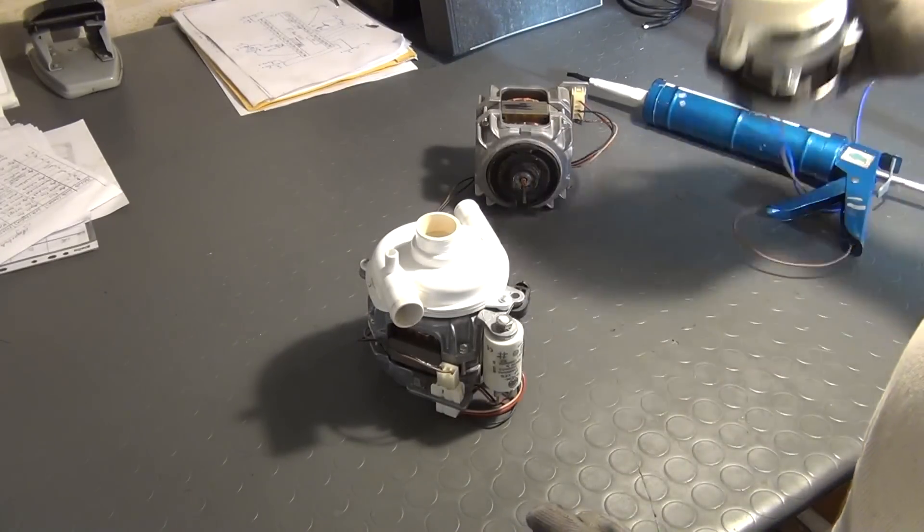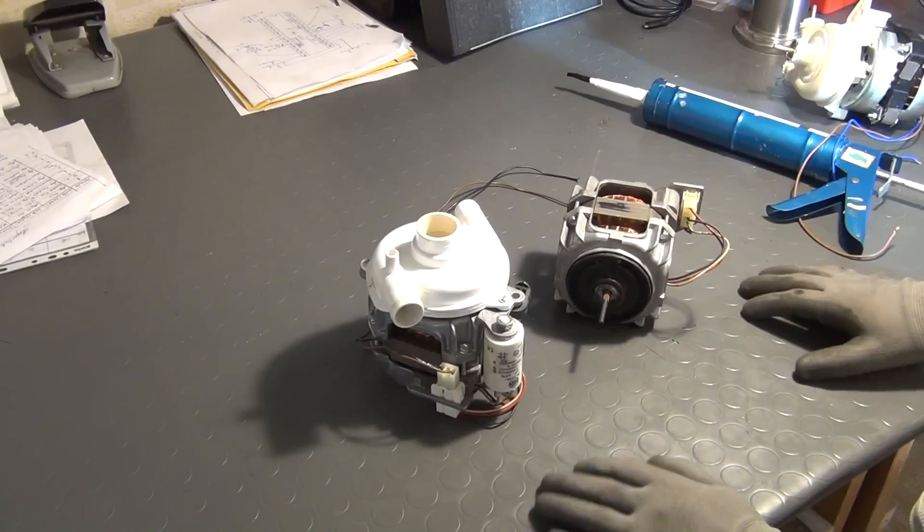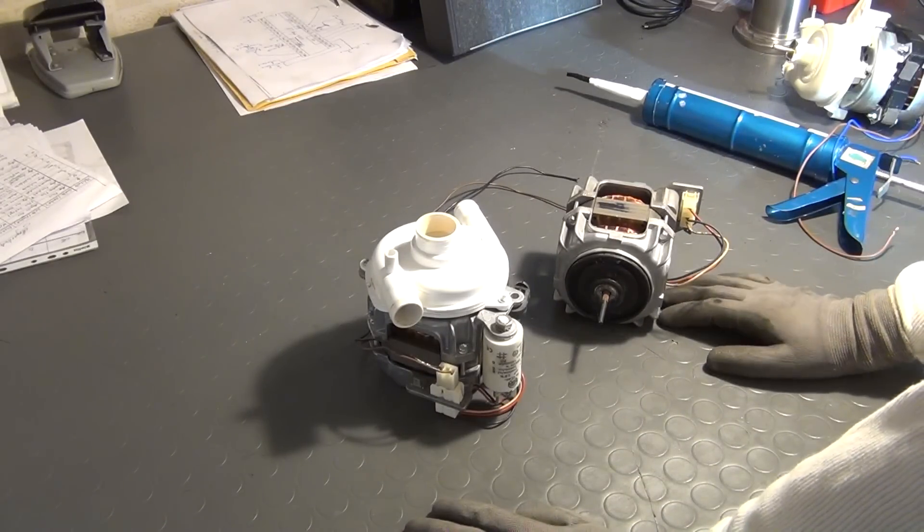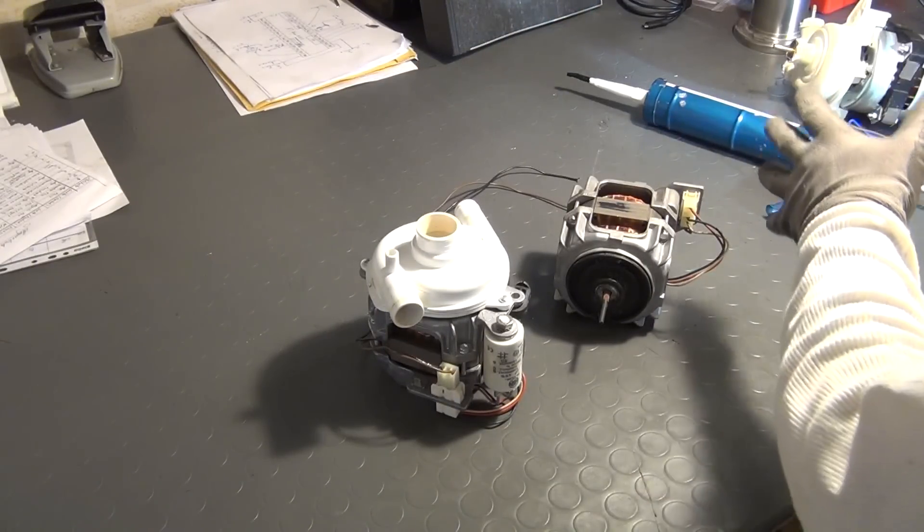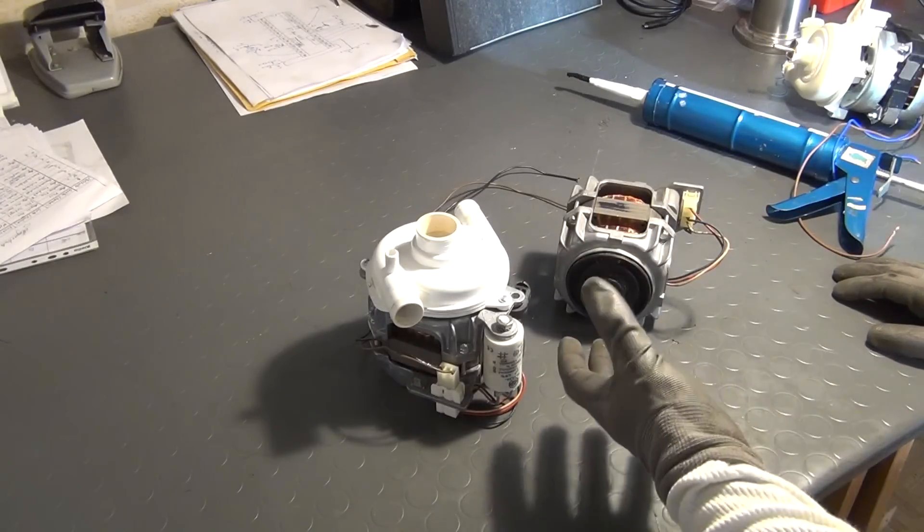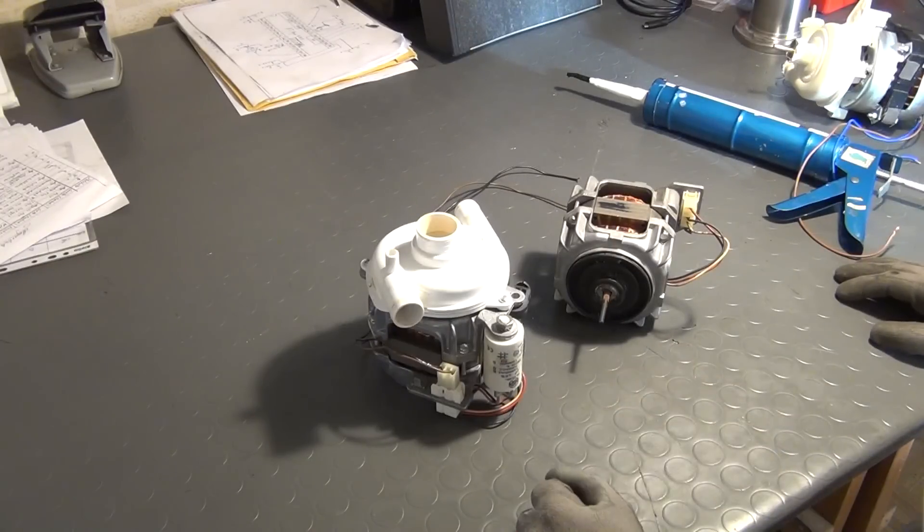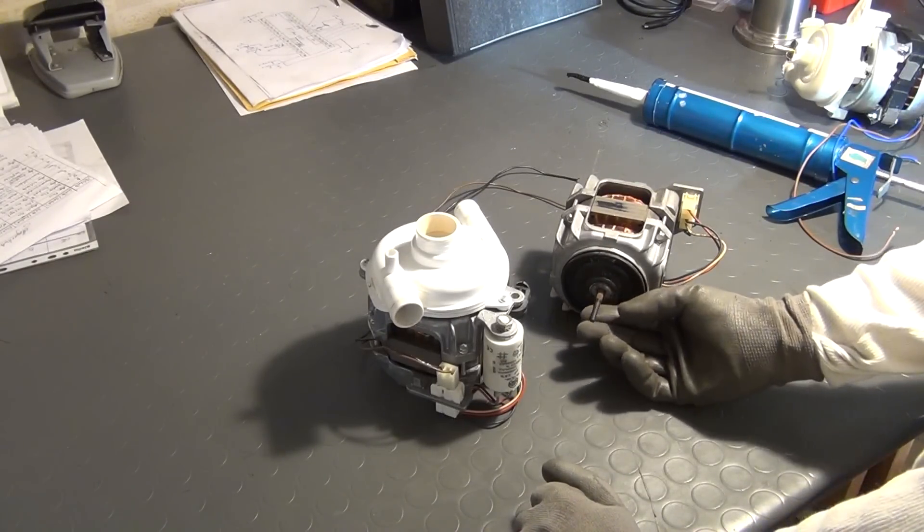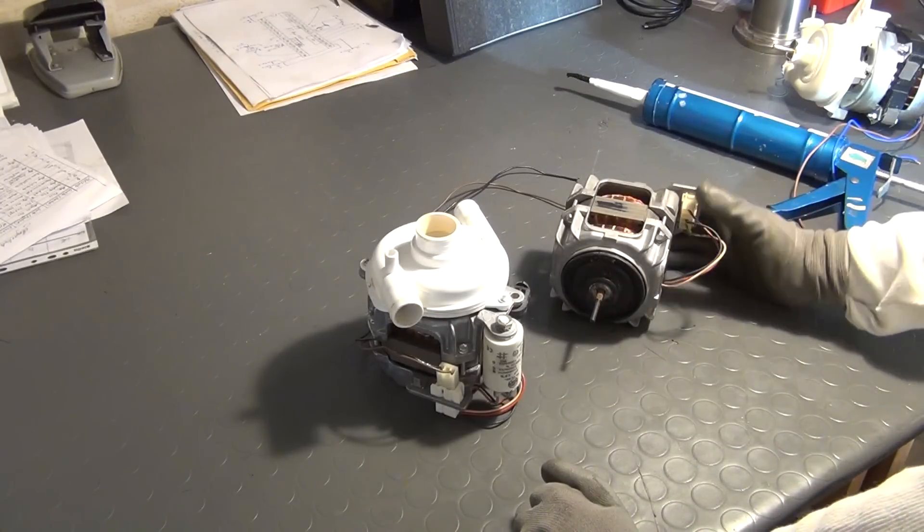But I also have salvaged two more pumps or at least the motors from dishwashers that I took apart just a few days ago. And I have to say that I found some differences to the Miele machine. Of course the Miele machine is of very high quality and was very expensive, while these pumps here are more from cheaper manufacturers. And I have to say that what I have shown you in the video is not applicable to every kind of dishwasher of course.